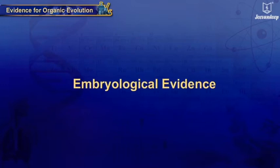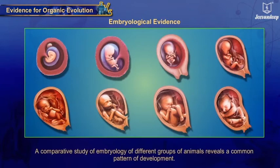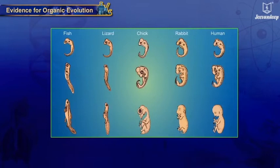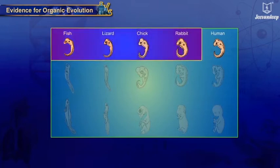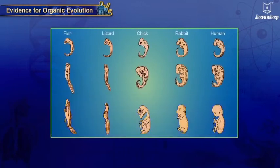Embryological Evidence: Embryology is the science that deals with the study of the development of the embryo. A comparative study of embryology of different groups of animals reveals a common pattern of development. Different vertebrates like fish, lizard, chick, rabbit, and human being show similarity in early stages of embryo development, but differ in the later stages. This suggests that during embryological development of an individual, the characters of the ancestors are repeated.